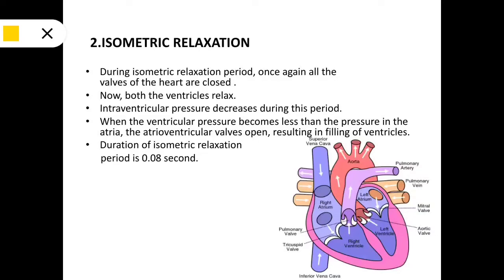The next stage is isometric relaxation. During the isometric relaxation period, once again all the valves of the heart are closed. Both ventricles get relaxed and intraventricular pressure decreases. When the ventricular pressure becomes less than the pressure in the atria, the atrioventricular valves open, resulting in the filling of the ventricles. The duration of the isometric relaxation period is 0.08 seconds.